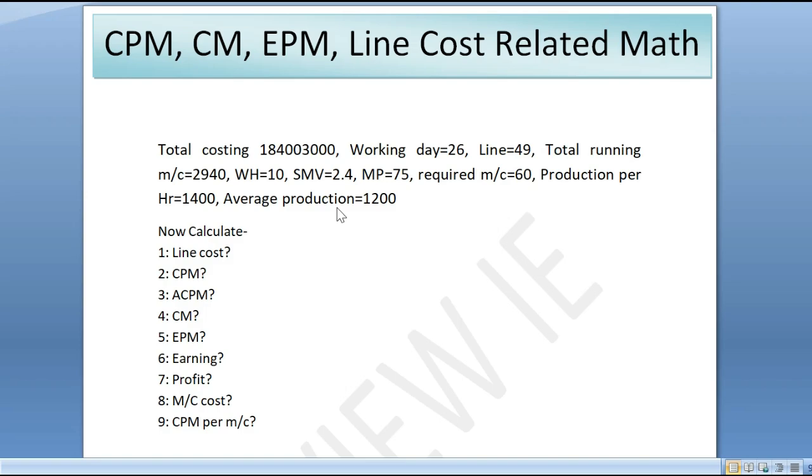Now calculate: line cost, CPM, ACPM, CM, EPM, earning, profit, machine cost, and cost per machine. This is what we need to find.